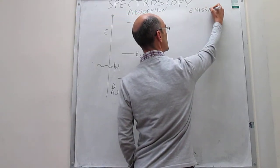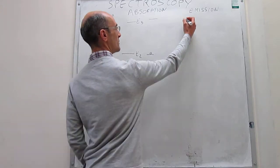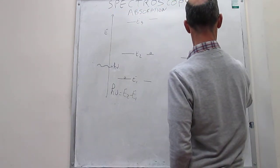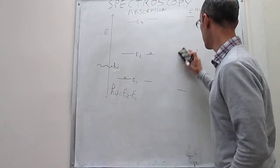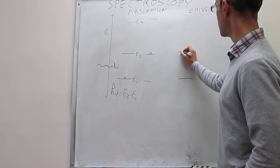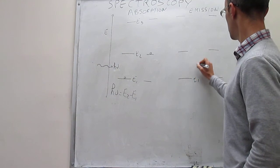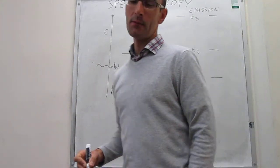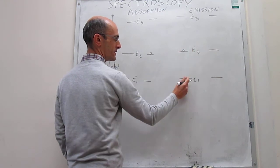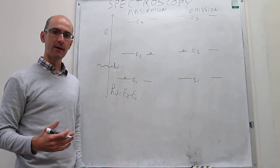A different type is called emission spectroscopy. This is not as common as absorption spectroscopy, but it is also very useful. Suppose we have the same system with energy states E1, E2, and E3 — drawn at exactly the same heights to emphasize it is the same system. In emission spectroscopy, the system is not in the ground energy state; instead, it is in an excited energy state — it could be E2 or E3. We are not specifying how the system got there.